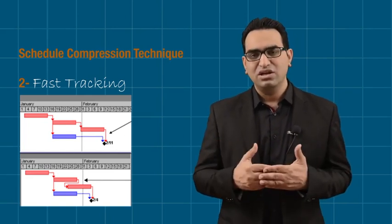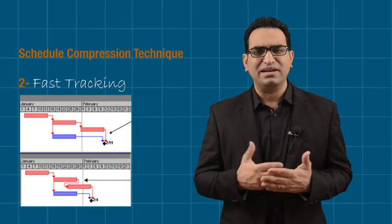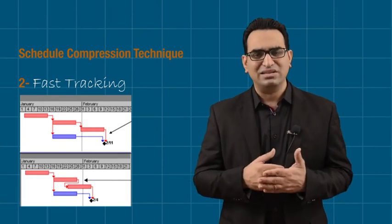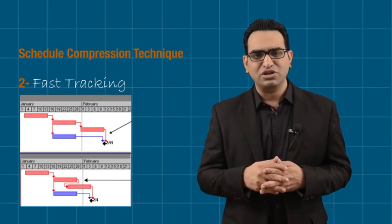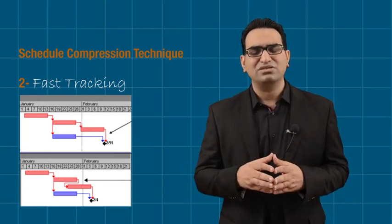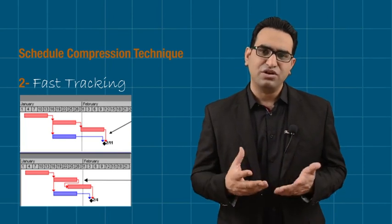So when we overlap activities in our project, the cost is increased. But more importantly with fast tracking, we can increase the risk. However, in both cases, I don't want to compromise on scope or quality.